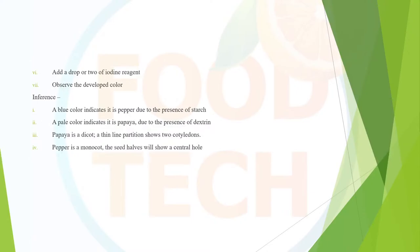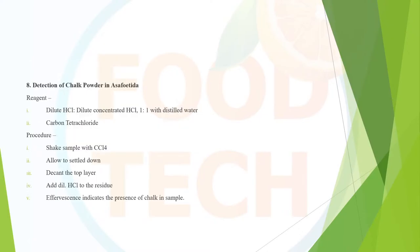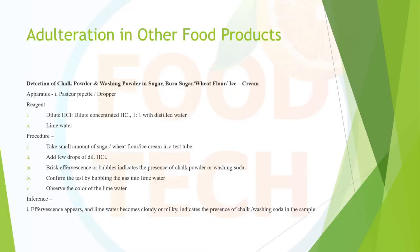An additional distinguishing fact: papaya is a dicot — its seed shows a thin-line partition indicating two cotyledons — while black pepper is a monocot, whose seed shows a central hole. Detection of chalk powder in asafoetida (hing) follows a similar procedure.